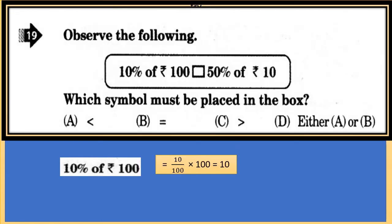Observe the following: 10% of Rs.100 □ 50% of Rs.10 — which symbol must be placed in the box? 10% of Rs.100 = 10/100 × 100 = Rs.10. Now, you calculate 50% of Rs.10 and place the correct symbol in the box. Check your answers at the end of the video.